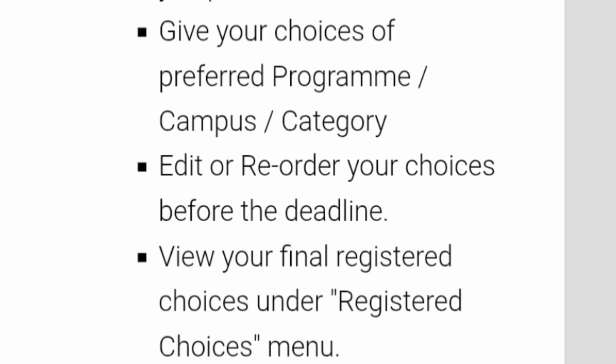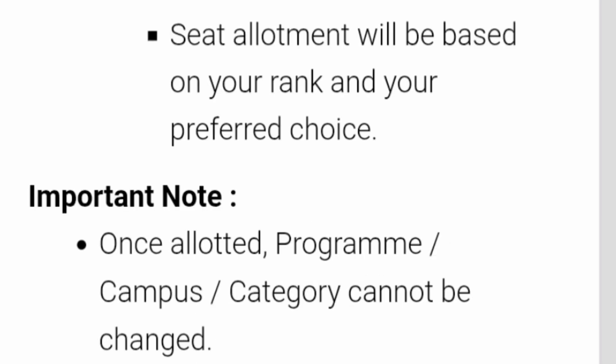You will be able to see your final registered choices under the registered choices menu. Please note that seat allotment will be based on your rank and your preferred choice. Once a campus and course is allotted within a particular category, it cannot be changed in any subsequent counseling rounds. Campus, program, and category everything will get fixed based on your choice filling and the seat allotment.